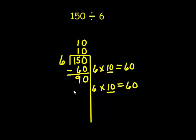And 10 times 6 equals 60. So we're going to subtract 60 from 90. Our 1s is 0, and our 10s, 9 minus 6 is 3.